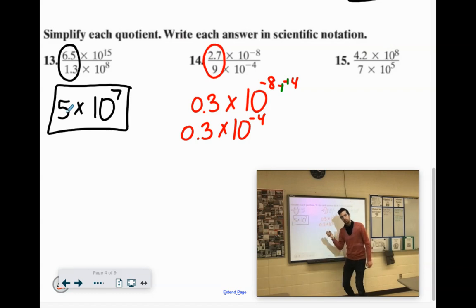We have to make 0.3 larger to make it 3 for proper scientific notation. We made that larger, so we need to make the exponent smaller. Smaller than negative 4 would be negative 5.